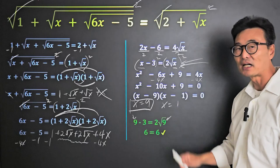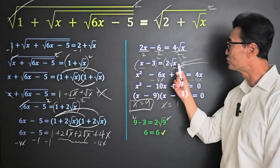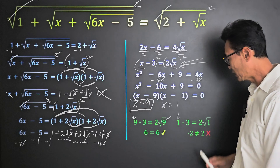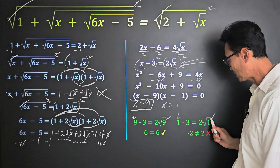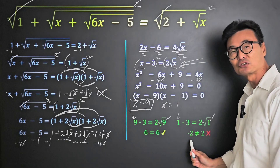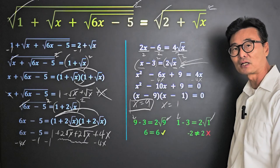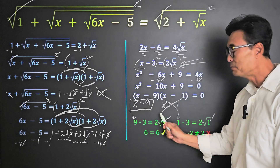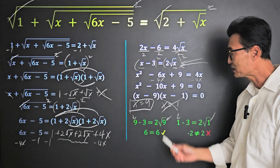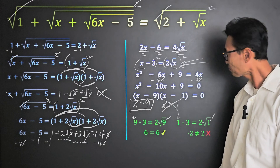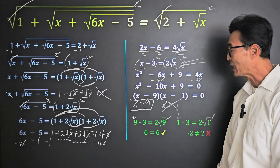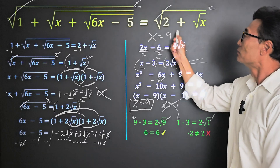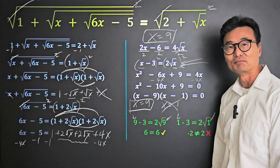Next, it's time to try x equals 1. If we take 1 and plug it into that equation, we end up with 1 minus 3 equals 2 times square root of 1. But we end up with negative 2 on the left and a positive 2 on the right, which are not equal to each other. Therefore, x equals 1 is eliminated as part of our solution — it's called an extraneous solution. Our final answer to this equation is only x equals 9.